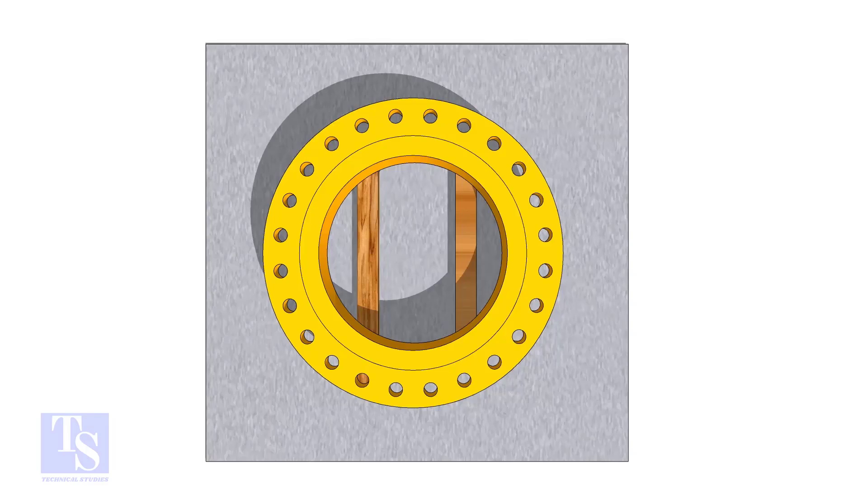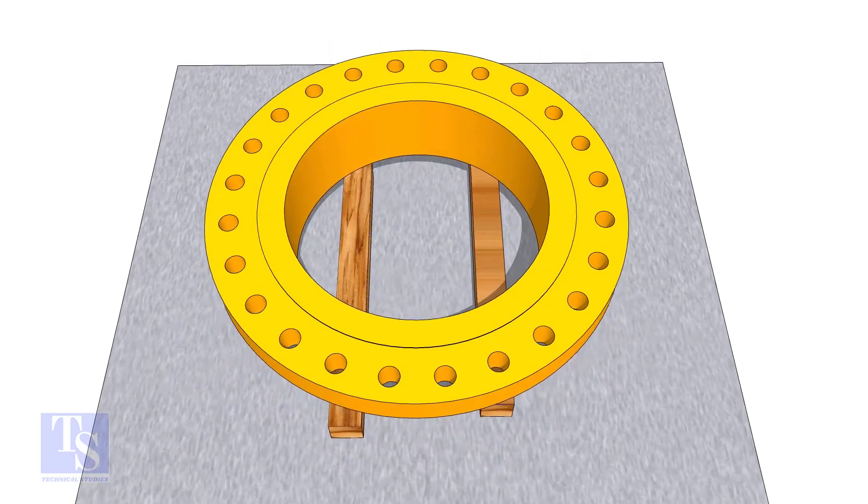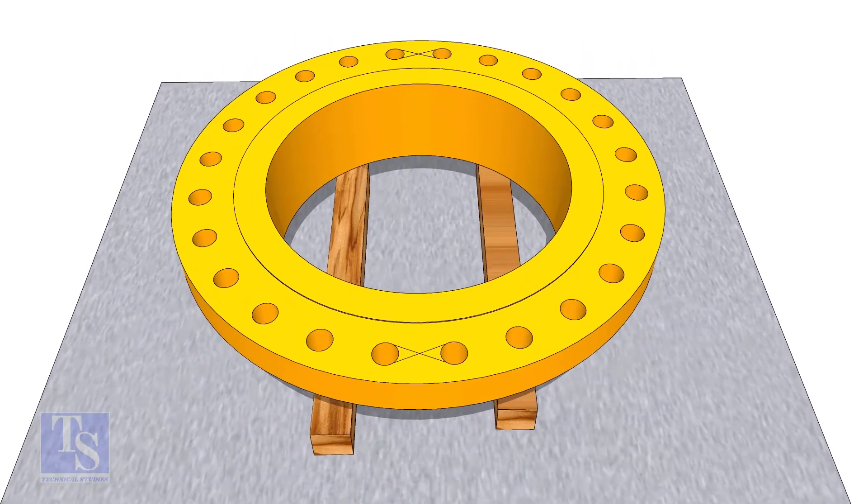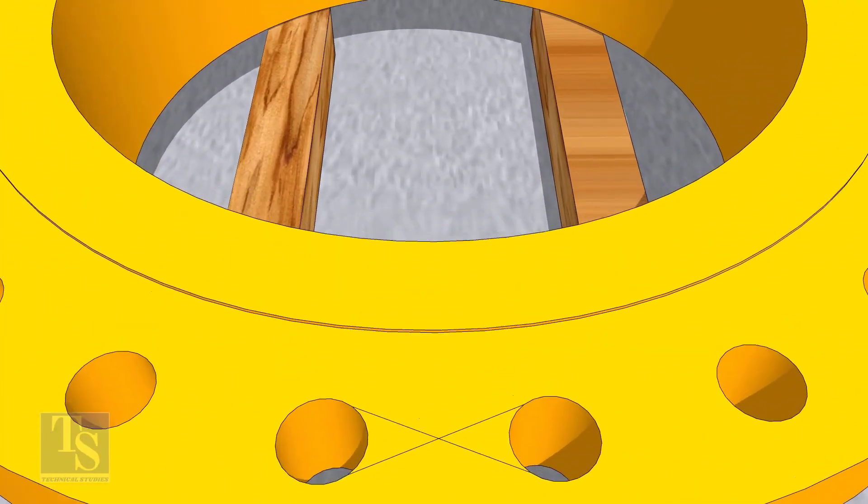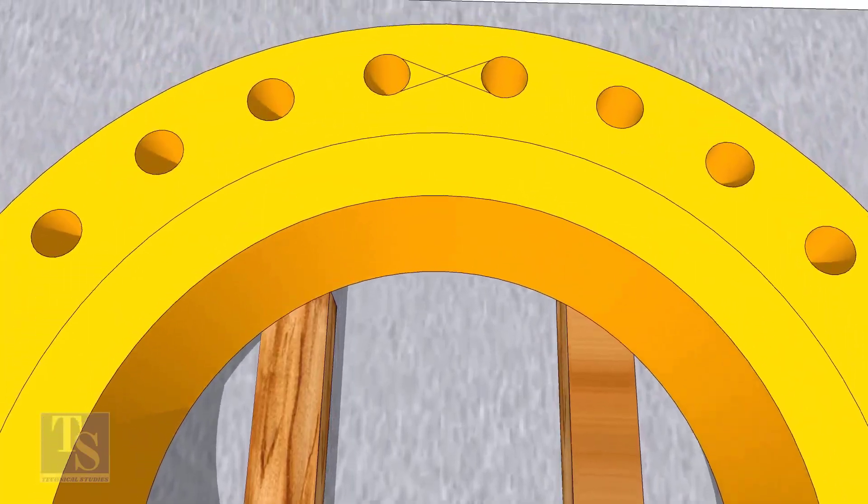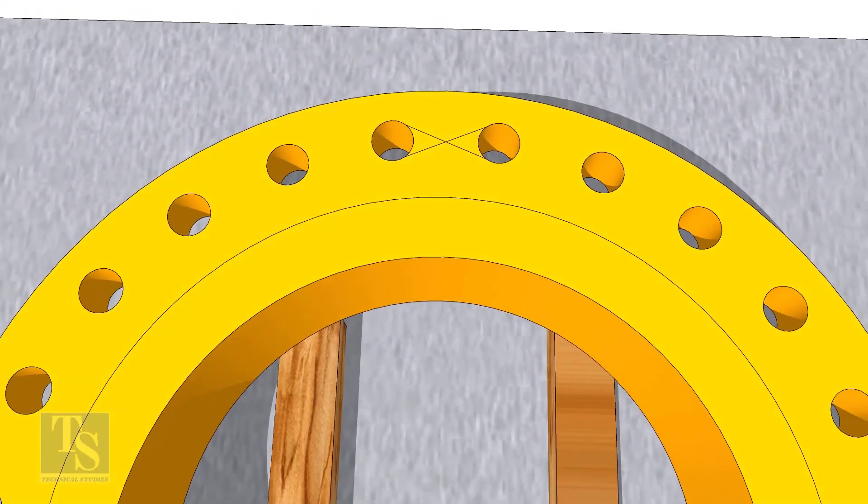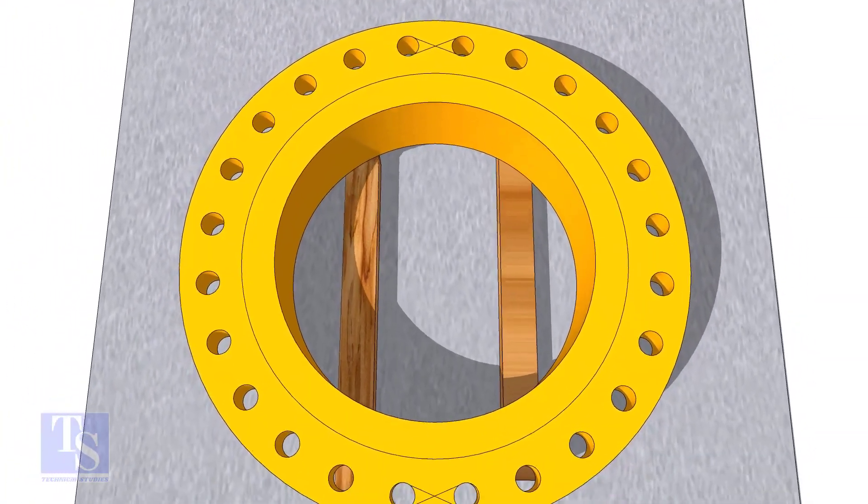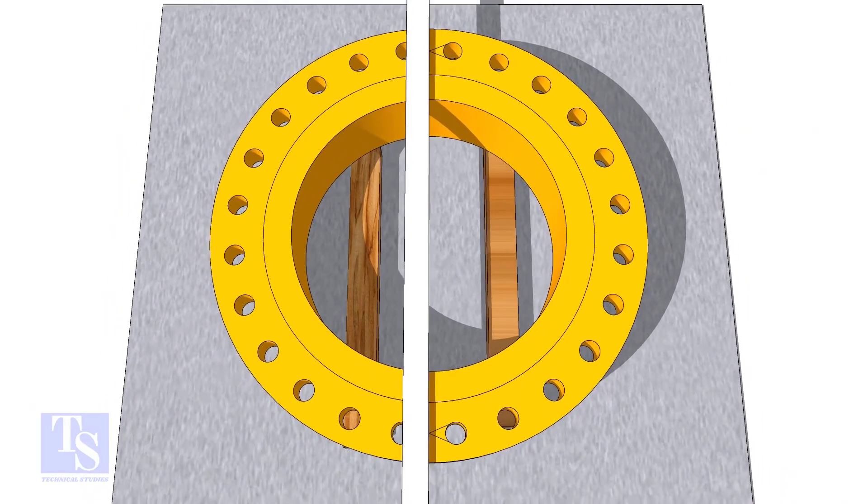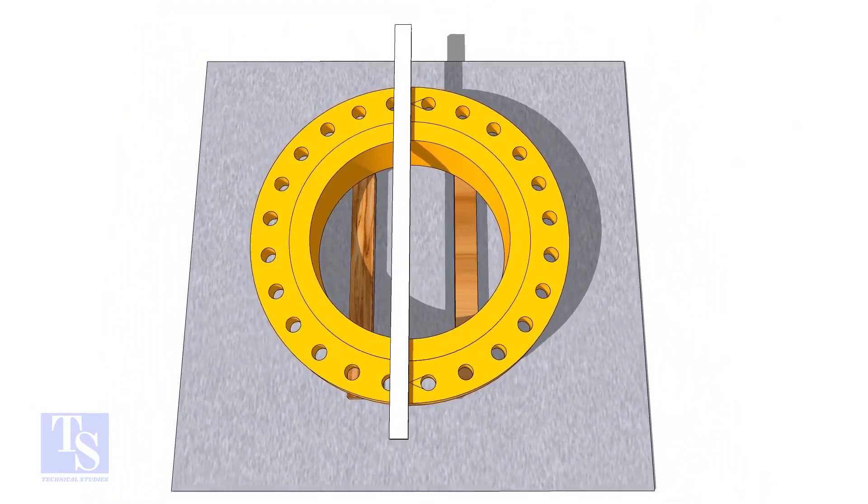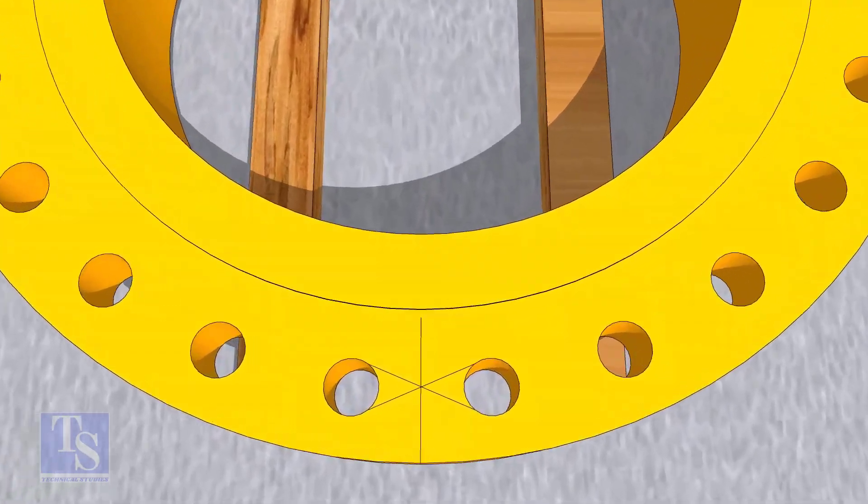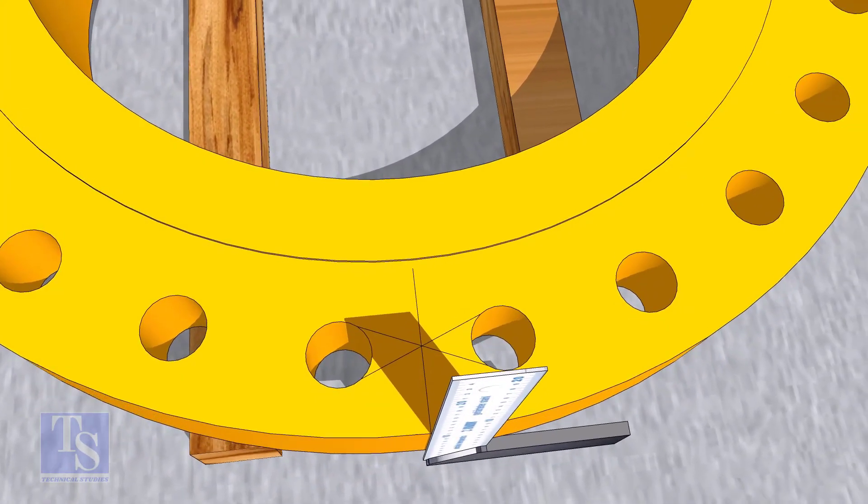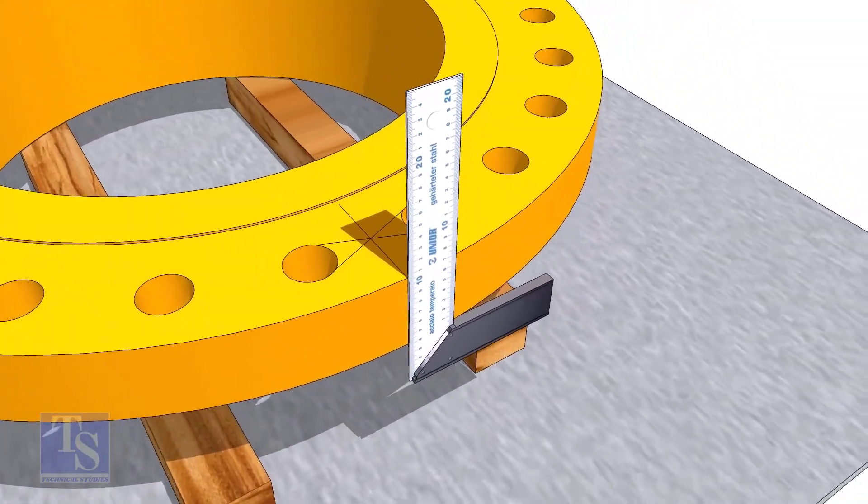In the second method, you need to mark the center line of the flange. Draw tangential lines on two adjacent holes on opposite sides. Draw a line as shown on the other side of the flange. Transfer the center line to the side of the flange.